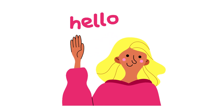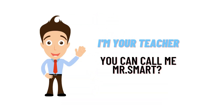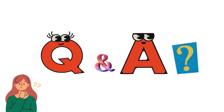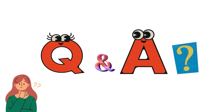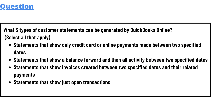Hello everyone, my name is Mr. Smart and I'm your teacher. I'll be teaching a different question and answer in this question and answer series. Today's question, which we'll be discussing, is: what three types of customer statements can be generated by QuickBooks Online? We have some options here — statement that shows only credit card or online payment made between two specific dates.